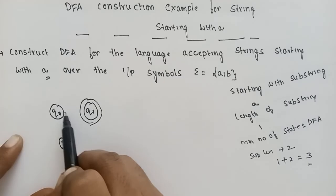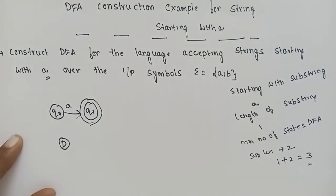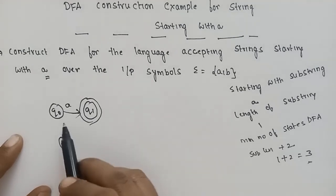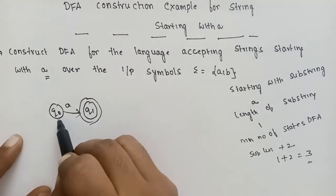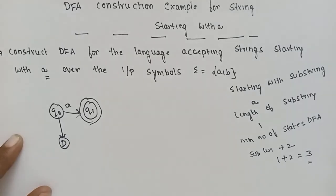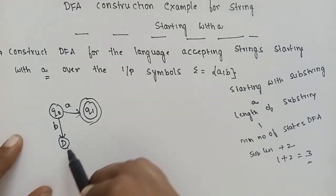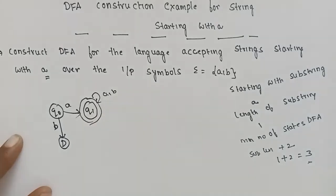Starting with A: from initial state Q0 on input A, we go to Q1 which is the final state. From Q0 on input B, we go to the dummy state. From Q1 on both A and B, we stay in the dummy state.